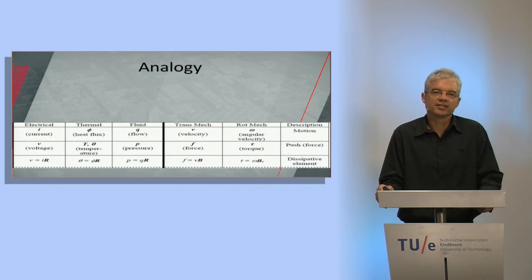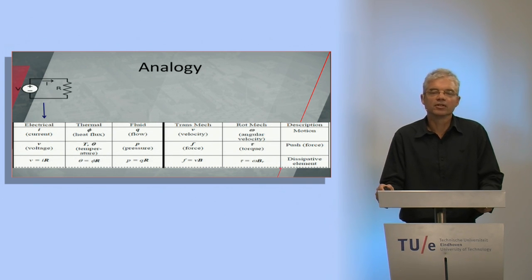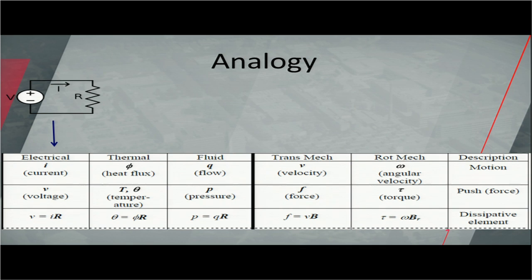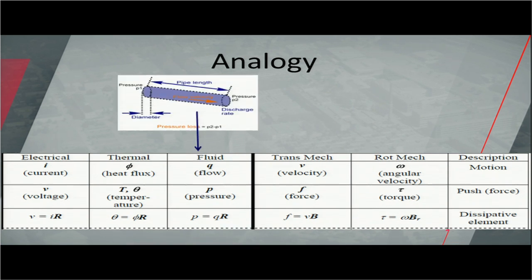What's important is that there is analogy between all those systems. In all systems, there's a kind of motion and there is a driving force. For example, in electrical systems, you have electrical current as motion and electrical voltage as driving force. In hydraulics, you have something flowing — for example, water or air — as motion, and pressure as the driving force.